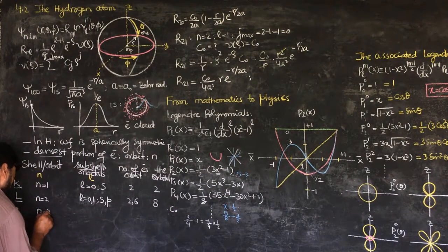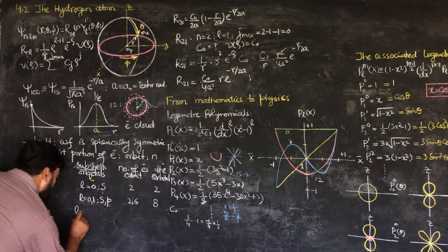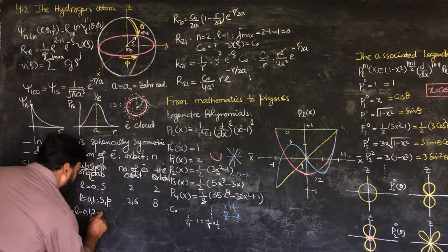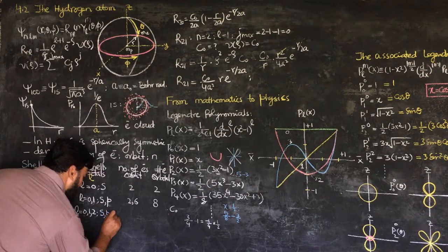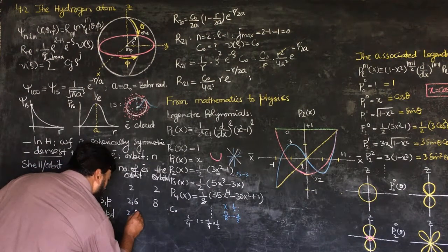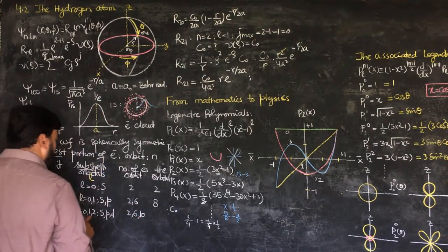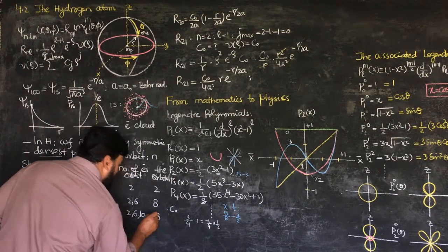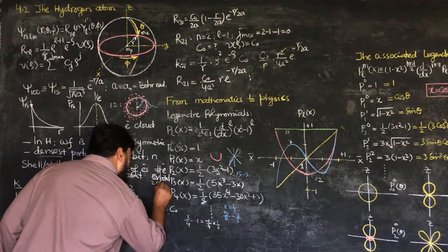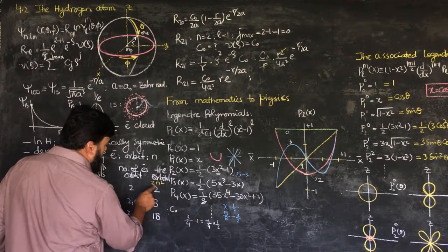When n is equal to 3, we will call this the M shell, and now here the l is having the chance to have values 0, 1, 2, not 3 because it will be equal to n then. And here we will have s, p, and d, while d is from diffuse. Here the s will have 2 electrons, the p will have 6 electrons, and the d will have 10 electrons. So the total number of electrons will be 18 here, which is the 2n square formula here. The total number of electrons are like 2n squared. So n1 we have 2, n2 we have 8, n3 we have 18.